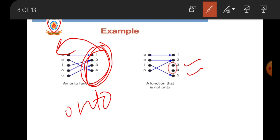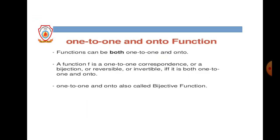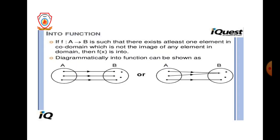If even one element has no pre-image, it will not be onto. Next type is one-to-one onto, which is the combination of one-to-one and onto functions. A mapping that satisfies both conditions is called a one-to-one onto function, also known as a bijective function.